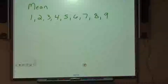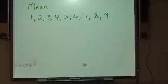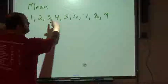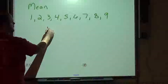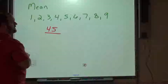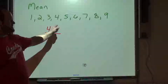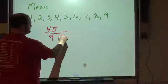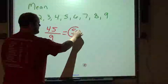So we have the digits 1 through 9. If we add those up, we get 3, 6, 10, 21, 28, 36, 45. The sum of all of these digits equals 45. Now we divide by the number of terms — we have 9 terms, 1 through 9 — divide by 9, and that makes the mean 5.